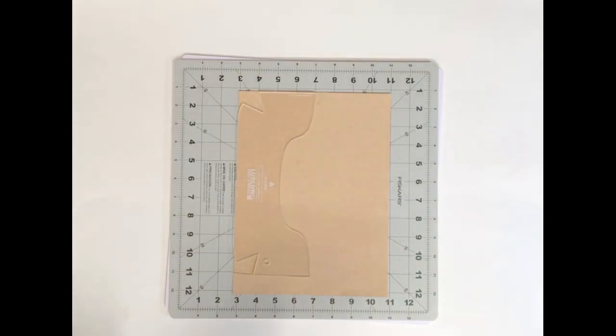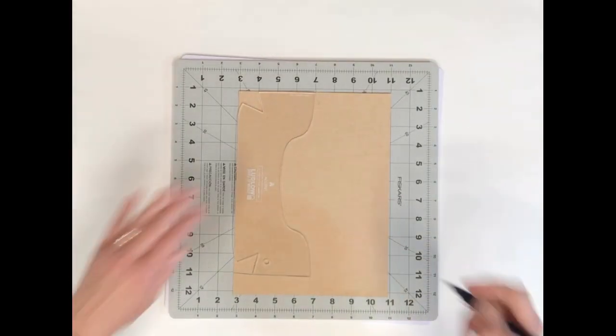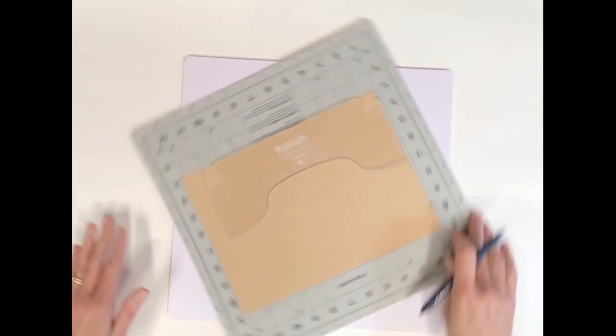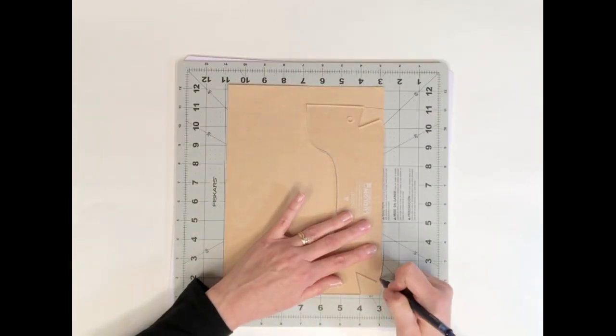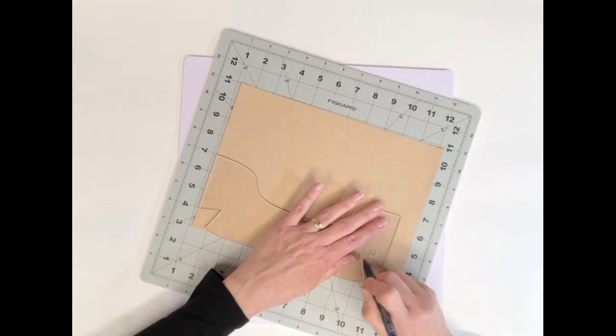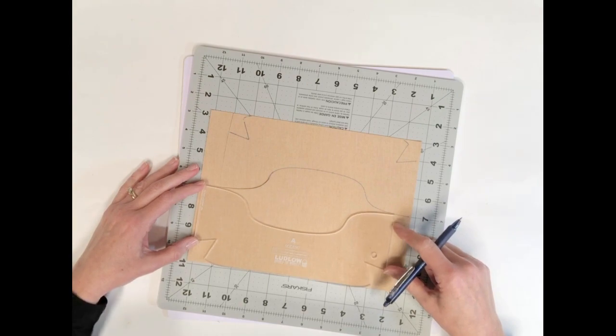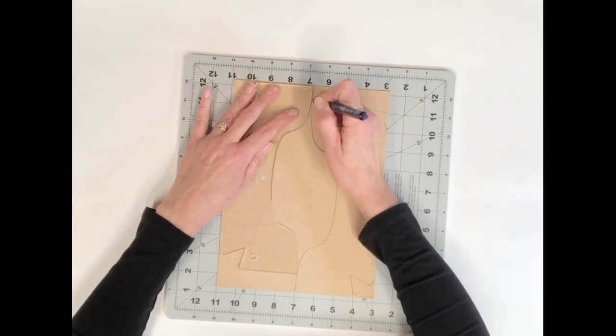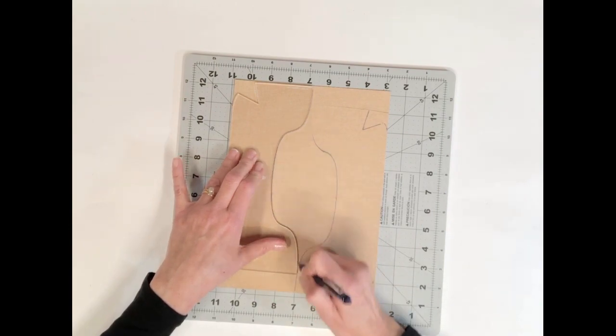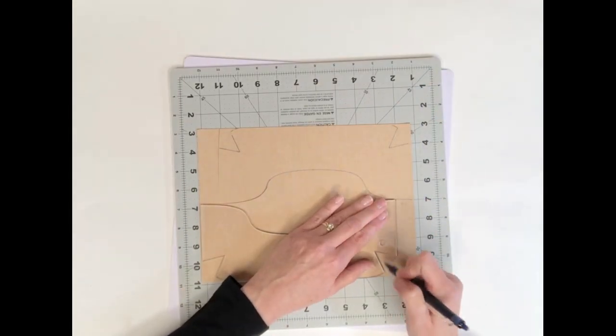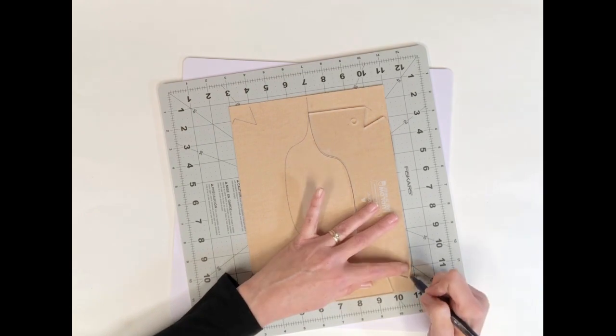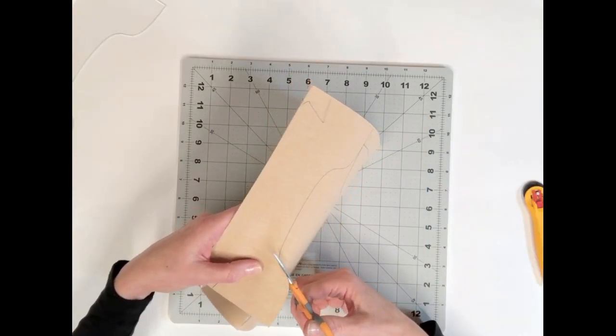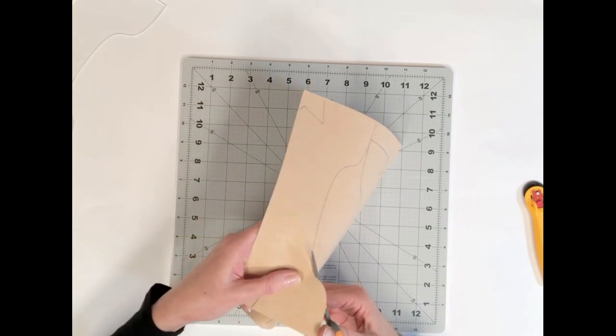With the cork placed wrong side up, I trace around the template using a pen. With a sharp pair of scissors, I'm ready to cut out my traced accent pieces.